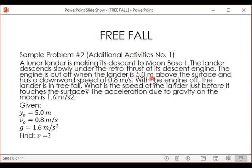And then we have a downward speed of 0.8 meters per second and the Moon's gravity which is 1.6 meters per second squared. What we need to find is the velocity, the speed, before it touches the surface, before it stops.